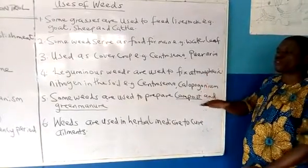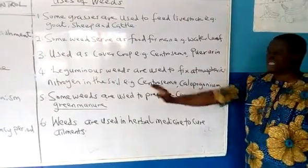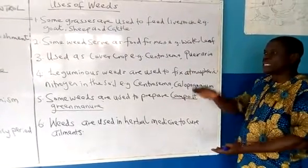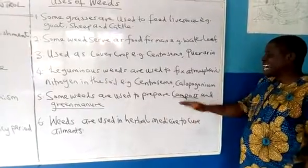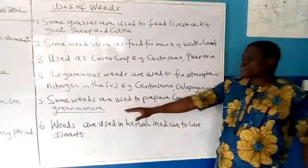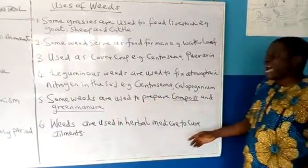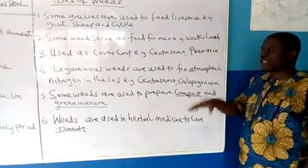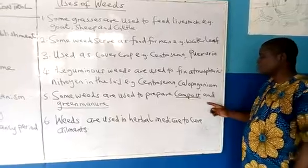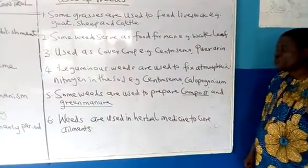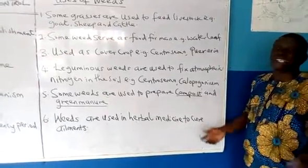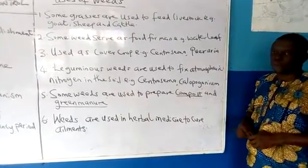The last point is that weeds can be used to prepare compost and green manure. When you gather weeds mixed up with urine and the dung of farm animals in a pit or heap and allow them to decay or decompose, it forms a compost manure. Also, when a piece of land is covered with weeds and such weeds are worked into the soil, that is what we call green manure. Some weeds can also be used to prepare herbal remedies to cure different kinds of ailments. These are the uses of weeds.